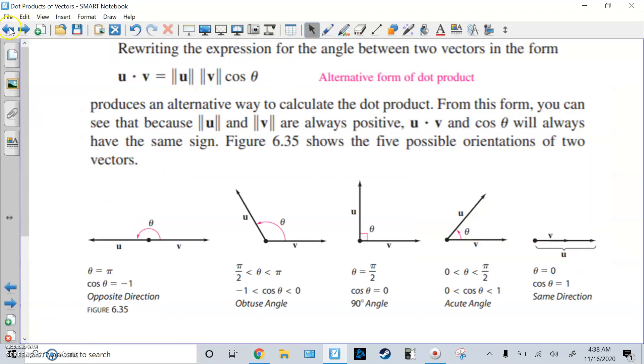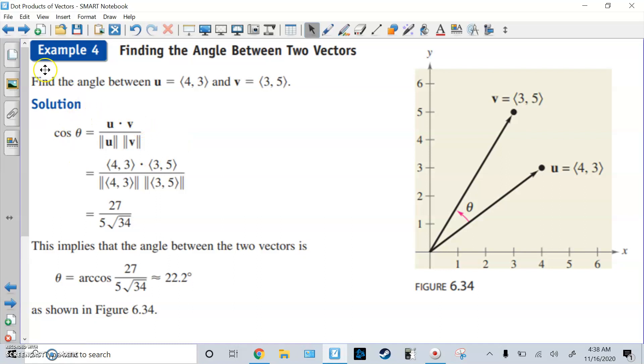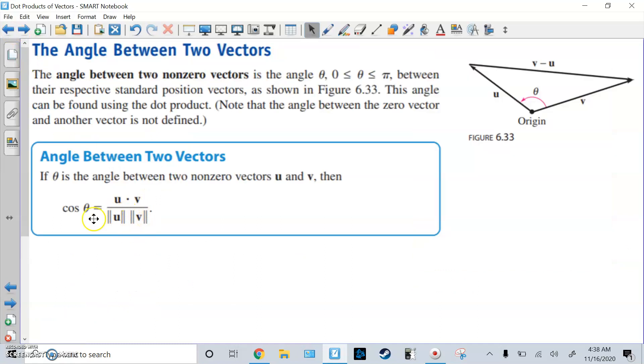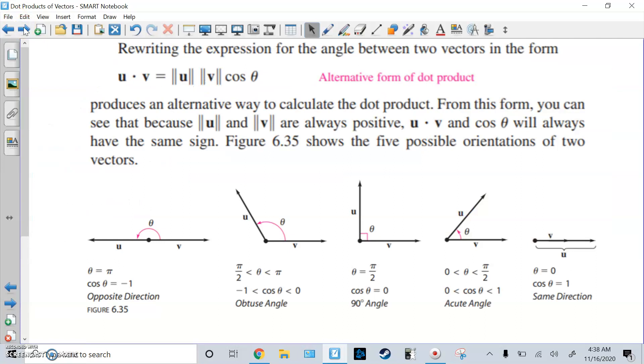Alright, also, if you solve this formula by getting rid of the fraction, you get its alternate form. Alright, so it gives us a new way to calculate the dot product. The dot product is also equal to the two magnitudes times the cosine of the angle. So from this form, you can always see that the magnitudes are always positive numbers, we talk about distance or length as positive. And then the dot product and cosine theta will always be the same sign, so they're both negative, or they're both positive, or they could both be zero.